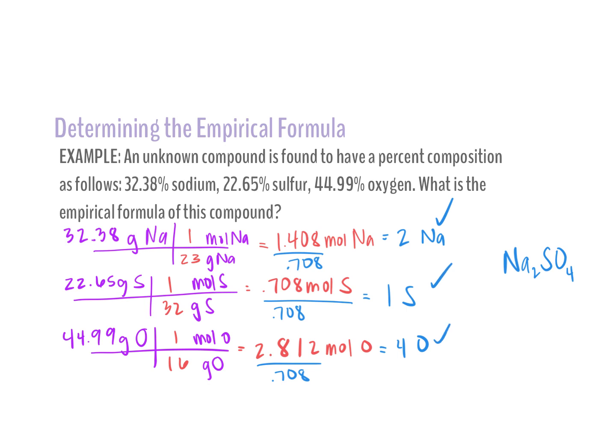In the moles step, we don't expect or want whole numbers — don't round to a whole number there. The step where we're looking for whole numbers is the ratio step, after dividing by the smallest. Sometimes people get 1.408 moles and want to round it to one — no, we don't want to do that. We want to keep that number exact so we can find our ratio clearly.